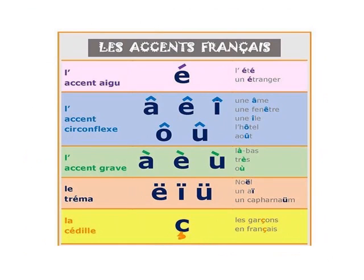Now let's see les accents français — that is accents in French. An accent mark changes the sound of a letter and the meaning of a word. Accents are used only on vowels, and also under the letter C to create a soft S sound before the letters A, O, or U.